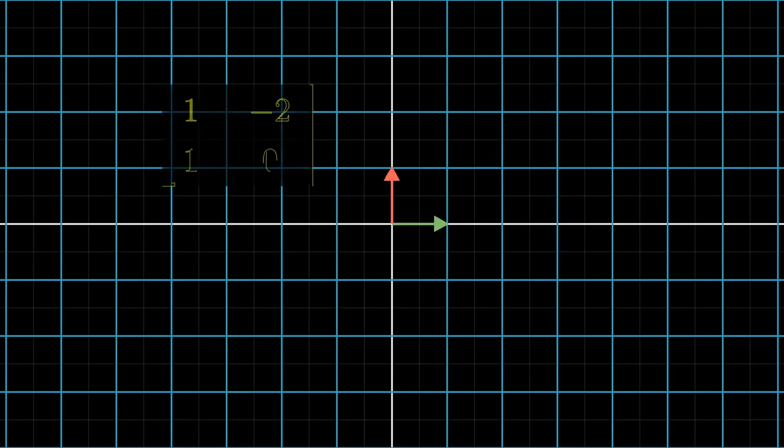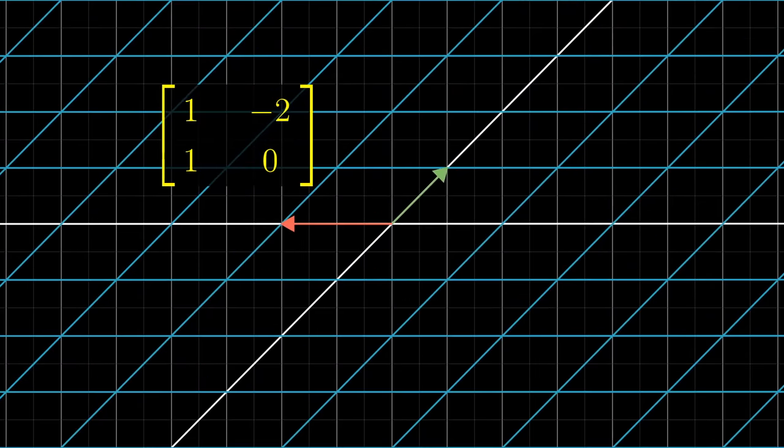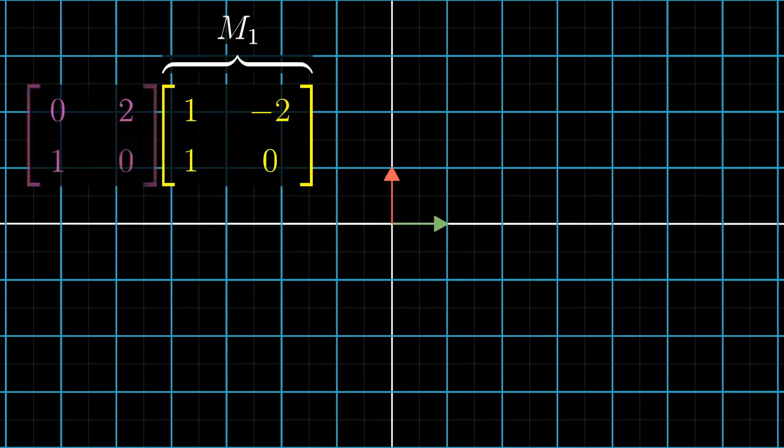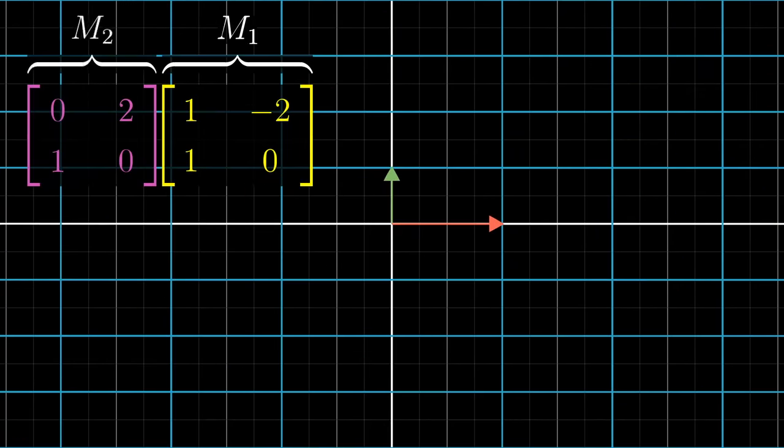Let's look at another example. Take the matrix with columns 1,1 and negative 2,0 whose transformation looks like this, and let's call it M1. Next, take the matrix with columns 0,1 and 2,0 whose transformation looks like this, and let's call that guy M2.